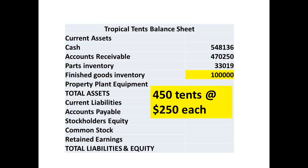The finished goods inventory is taken from the production budget. The ending inventory of 450 tents is valued at $250 per tent, giving a figure of $112,500 as the finished goods inventory.